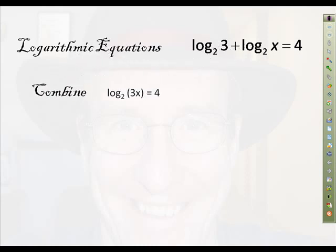So remember we kind of broke it down into three steps. We've got combine. And when I say combine, remember that just means use the properties to take all these log terms and make them into one. So you can see I've done that here. I've taken this log base 2 of 3 plus log base 2 of x equals 4, and I combined it into just a log base 2 of 3x.